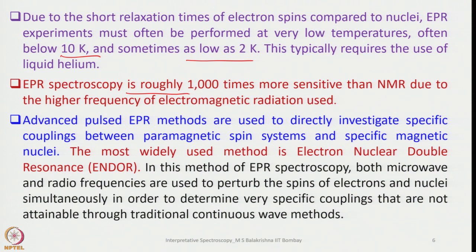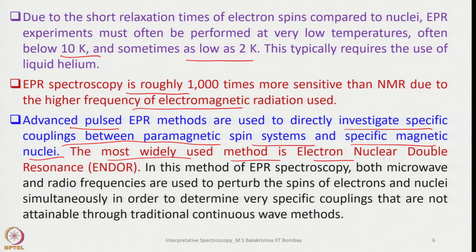EPR spectroscopy is roughly a thousand times more sensitive than NMR due to the higher frequency of electromagnetic radiation employed. Advanced pulse EPR methods can directly investigate specific couplings between paramagnetic spin systems and specific magnetic nuclei. The most widely used such method is electron nuclear double resonance, known as ENDOR, in which both microwave and radio frequencies are used to perturb electron and nuclear spins simultaneously.